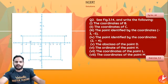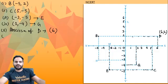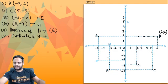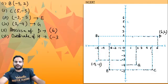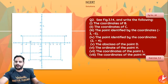Then ordinate of point H. I will check the ordinate of point H — H is over here. Ordinate means y-coordinate. The x-coordinate is minus 5, and the y-coordinate is minus 3. So the ordinate of H is minus 3.